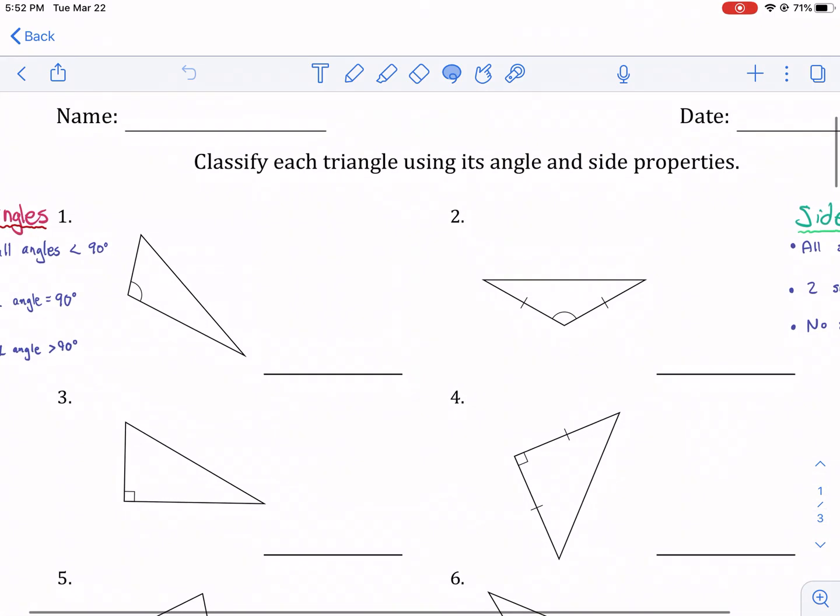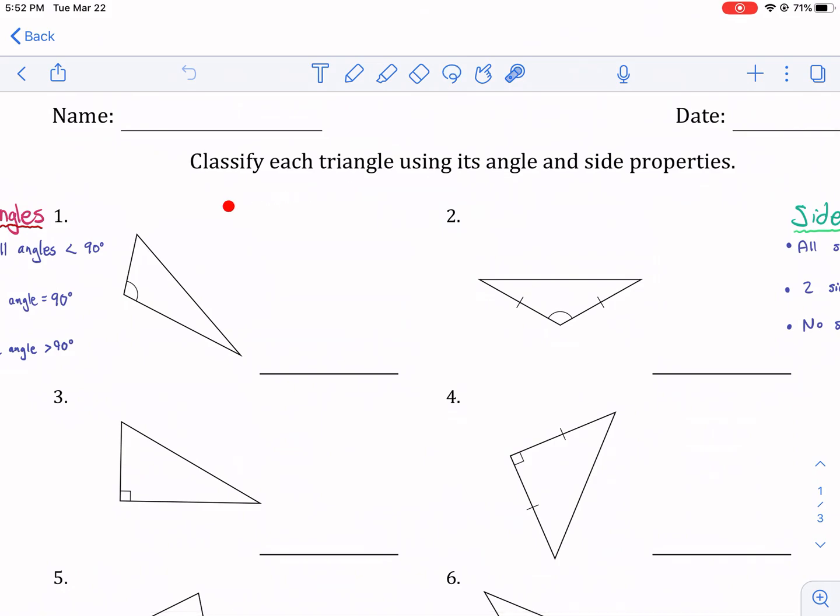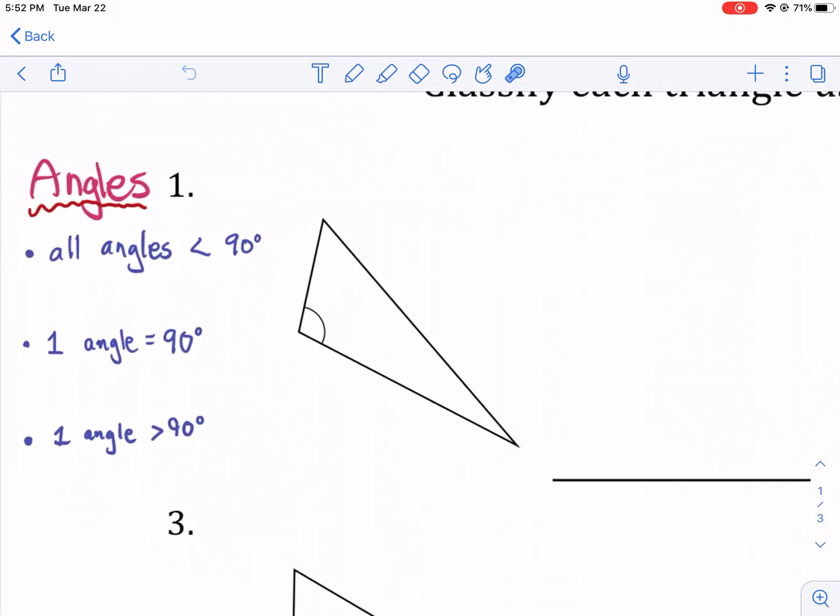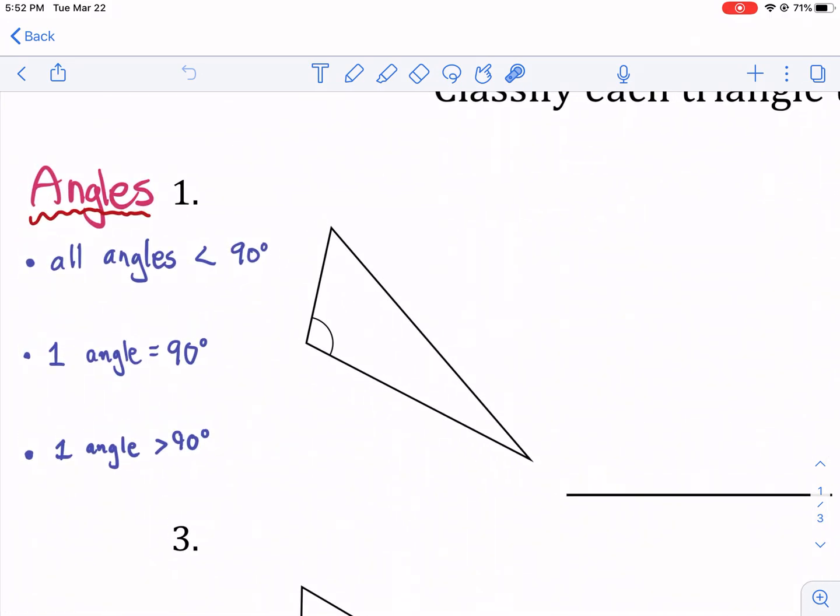Basically what this worksheet is asking is to classify each triangle using its angle and side properties. Triangles can be broken down by their angles and also their sides. What are these properties? We have the angles. Let's talk about the angles first. Each triangle has three and we know they need to add up to 180.